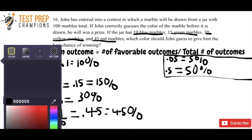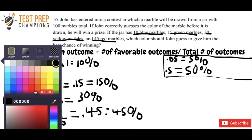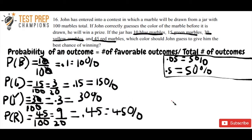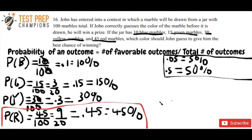Now that we've calculated these probabilities, we can see which one would be the best to bet on. You've got a 10% chance of drawing a blue marble, 15% chance of drawing green, 30% chance of drawing yellow, and a 45% chance of drawing red. Since you've got the highest probability of drawing a red marble, the answer is obviously going to be red.